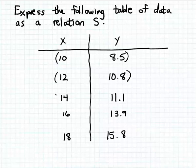And that gives us a set of ordered pairs, which is exactly the definition of a relation. So let's rewrite this table of data as a set of ordered pairs as a relation.